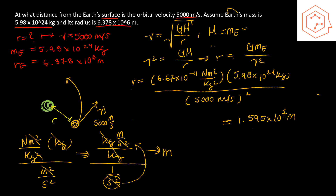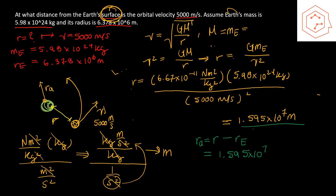However, we found the orbital radius, not the distance from Earth's surface (altitude). The altitude Ra equals the orbital radius minus Earth's radius: 1.595×10⁷ m − 6.378×10⁶ m = 9.58×10⁶ meters. That is the distance from Earth's surface where the orbital velocity is 5,000 m/s.